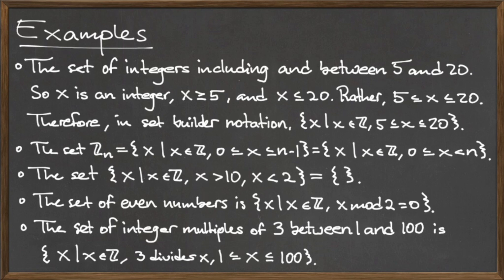There are two ways to express Zn in set builder notation. The first, we can write {x | x is in Z, and 0 ≤ x ≤ n - 1}.